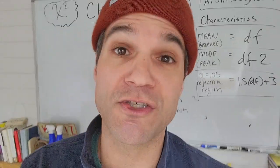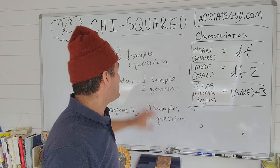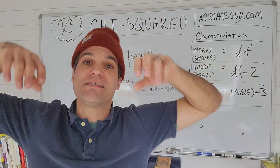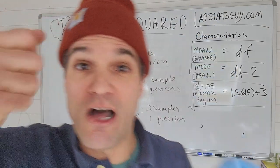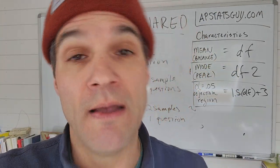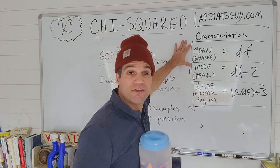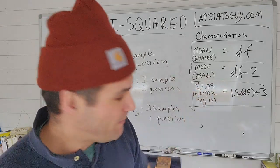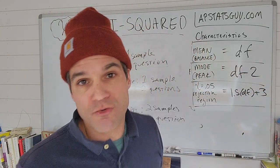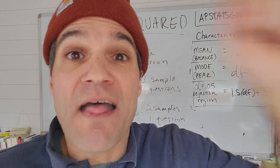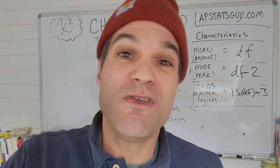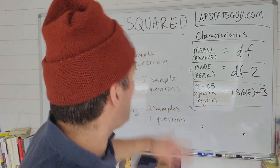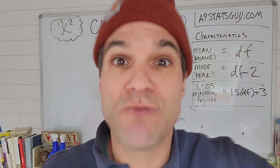The big idea of chi-squared is that it's a sampling distribution — from taking a bunch of samples, everybody calculating a statistic, creating a pile of chi-squareds. Your mean is going to be the degrees of freedom, the mode is degrees of freedom minus two, and the rejection region is about one and a half times the degrees of freedom plus three. Make your sketch, write your null and alternative, draw the model, think about what would be weird, then calculate your statistic. Even on your calculator when you hit draw, it draws this same model with those exact qualities. Have a great day — chi-squared for life!